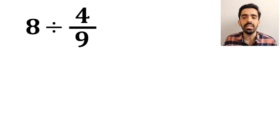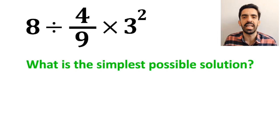If we have the expression 8 divided by 4 over 9 times 3 to the power of 2, then what is the simplest possible solution for this expression?